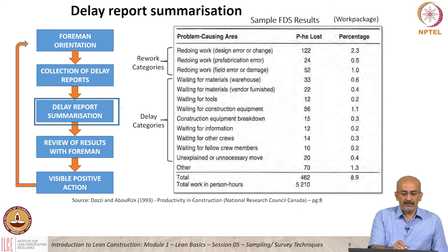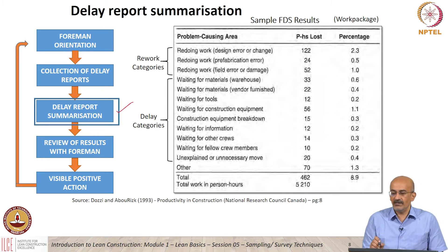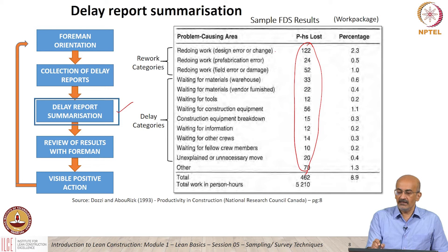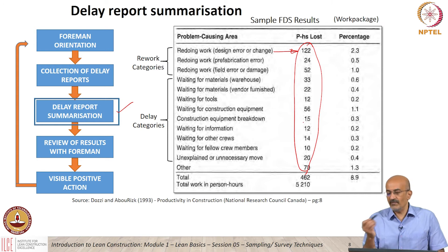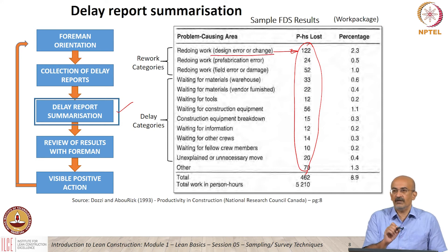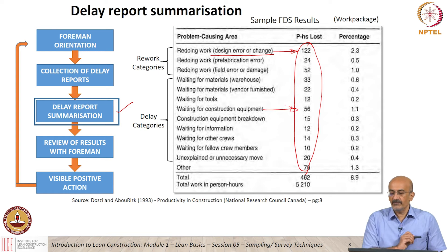Then the delay reports are summarized. This is a typical summary — you can see here the person hours lost for different categories, for a particular category how much was lost and the percentage of time that is lost. For example, in design change or error, there were so many person hours lost — that seems to be one very critical issue. Is change of design in the control of the foreman? No. So if we take some action to look at design review, or how do we make sure this change or error is avoided if possible, that would bring that number down. Waiting for construction equipment is another category which is taking significant time and also jumps out from the analysis.